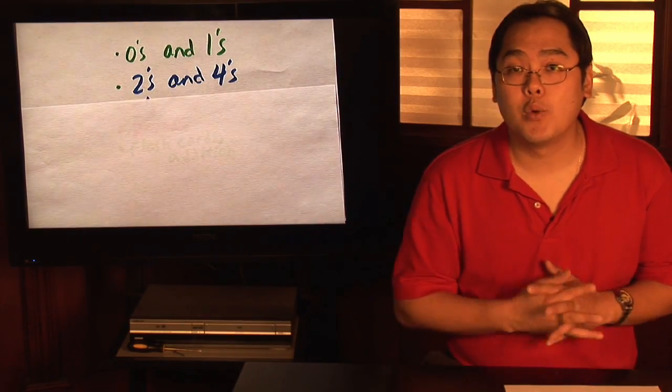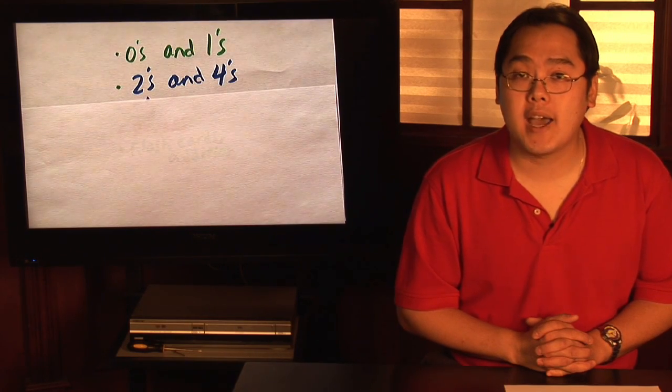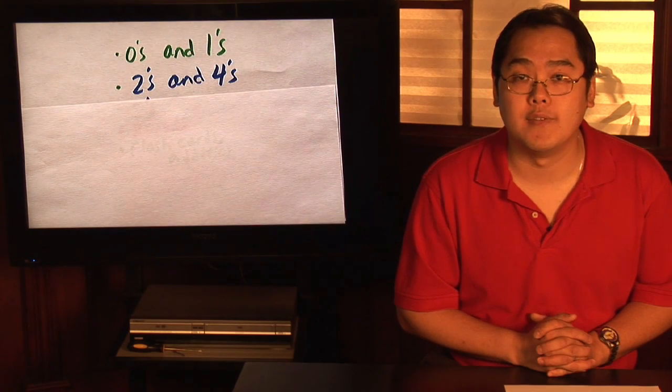With twos and fours, with twos, think about doubling. For example, if you want to find out what five times two is going to be, think about five and doubling it. So five and five is going to give you ten.